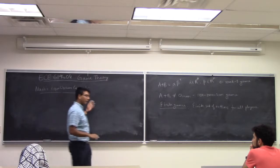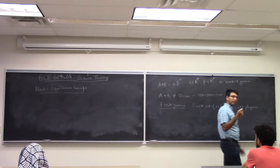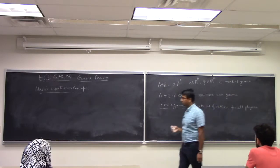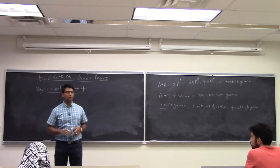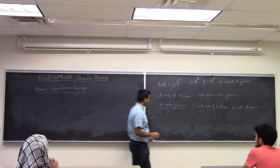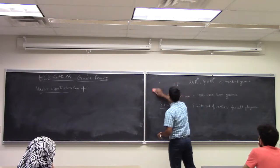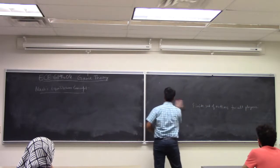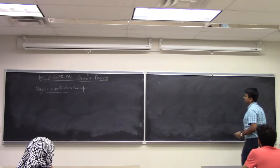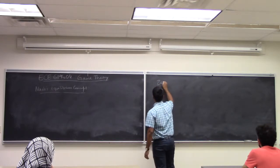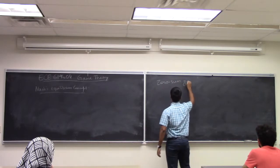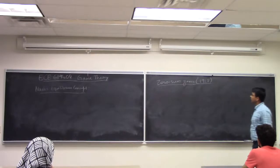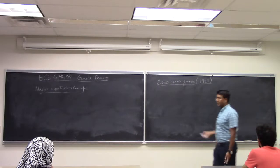So there is some history to Nash's equilibrium concept. The history is von Neumann studied zero sum games back in 1928, so he defined the idea of utility function and he defined an equilibrium concept for zero sum games. I am going to transport you back to 1928, which is about 89 years ago.